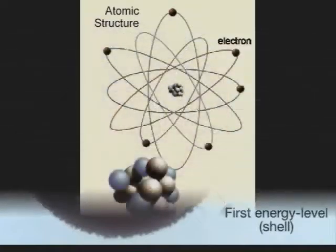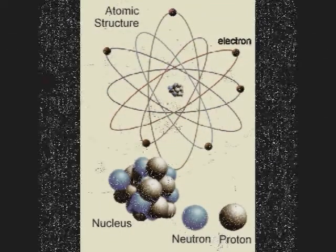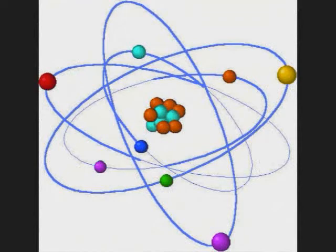An atom is classified according to its number of protons and neutrons. The number of protons determines the chemical element, and the number of neutrons determines the isotope of that element.